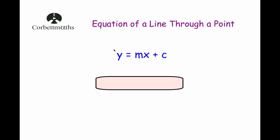One way to do it is to use the equation of a line y equals mx plus c, use m as the gradient of the line and plug in the x and y coordinates of the point that you know the line goes through and find your c. When you've got that c, you can write out the equation of the line in the format y equals mx plus c.